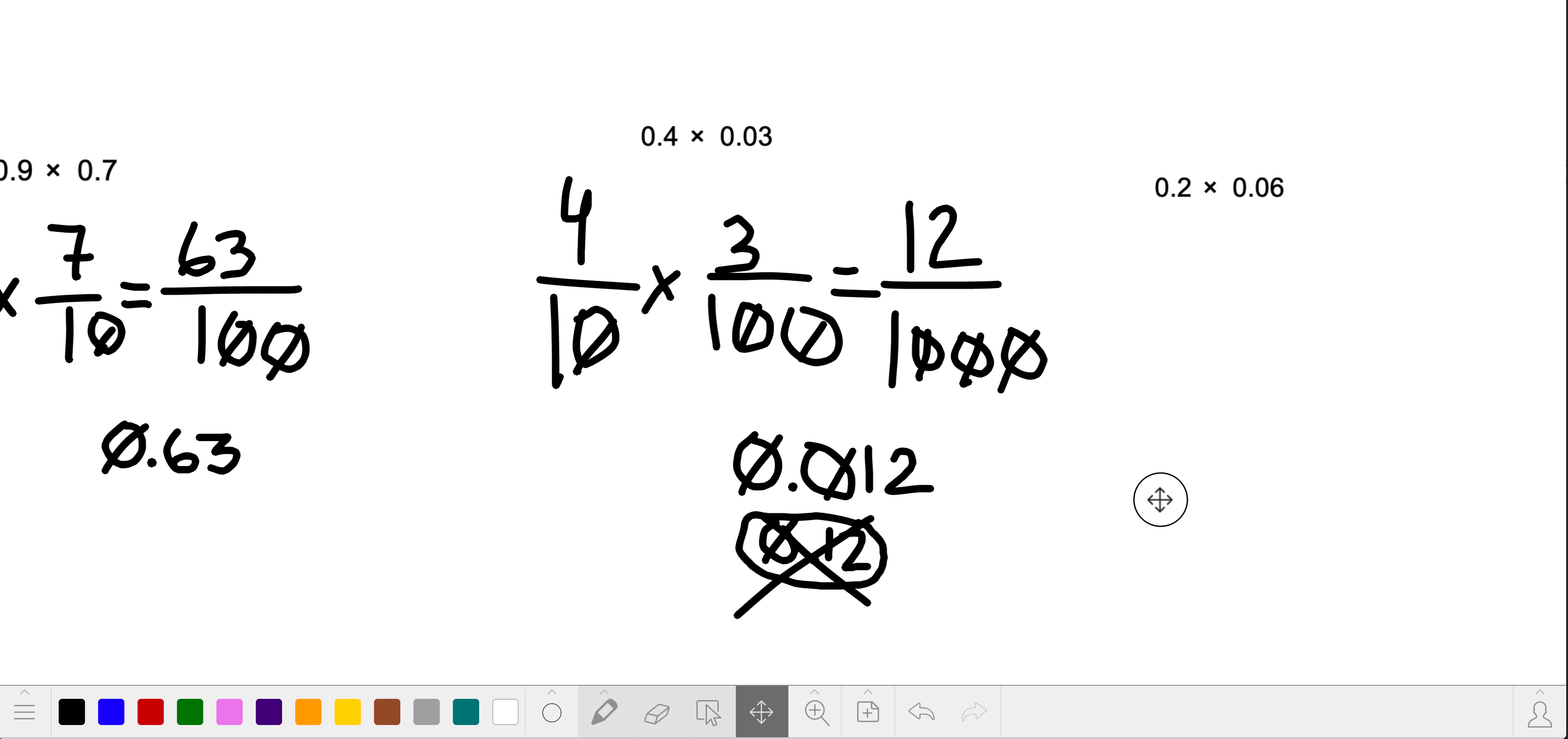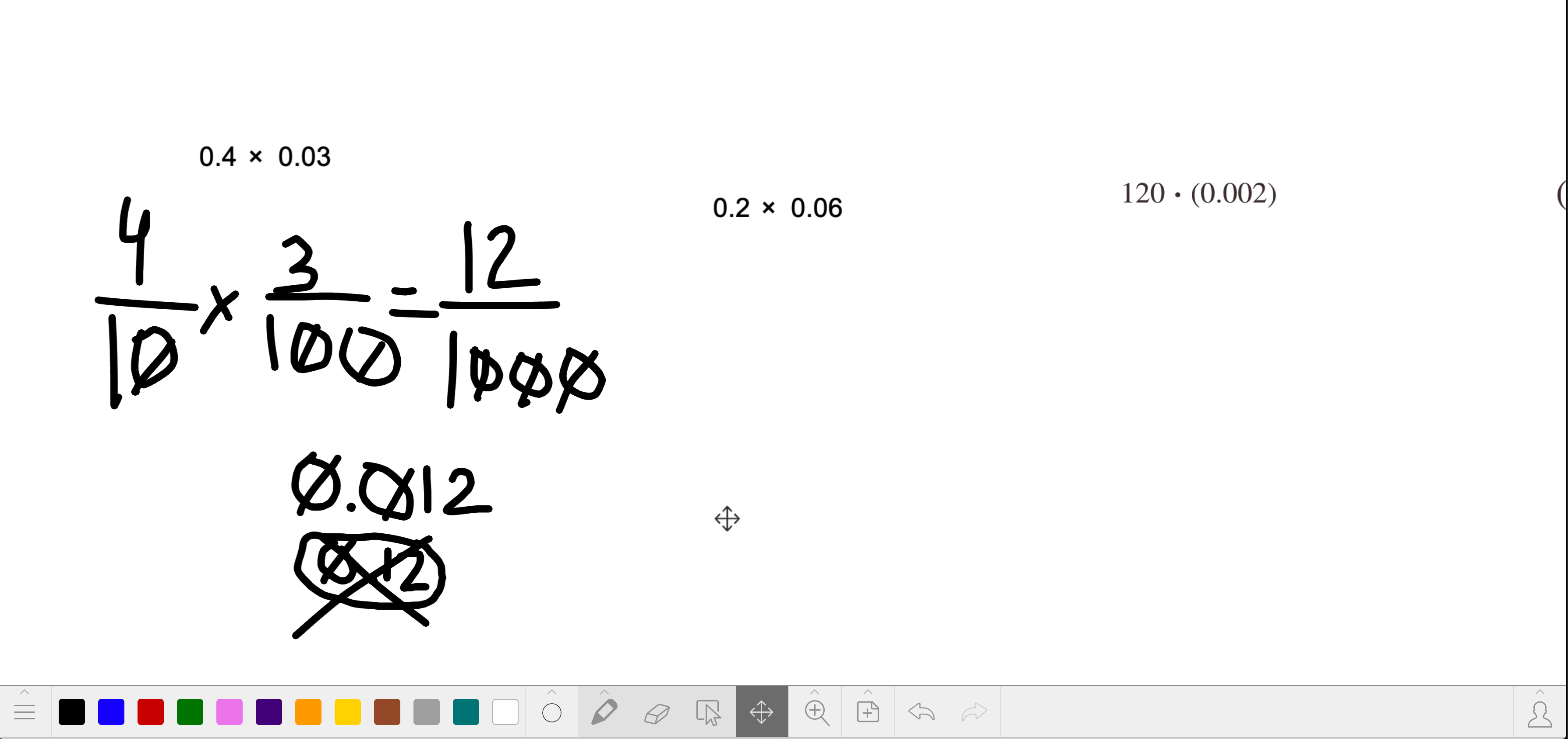So let's try the next one. This one is similar to the previous problem. This is 2 tenths, so we have 2 tenths, and we're multiplying it by 6 hundredths, so 6 over 100. I hope you guys really see why it was so important that I made you guys read these decimals the proper way. All right, so we have 2 times 6, which gives us 12, and then 10 times 100, which gives us 1,000.